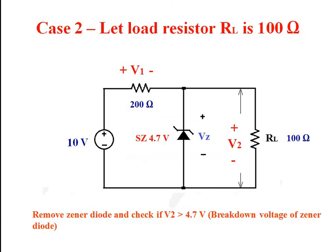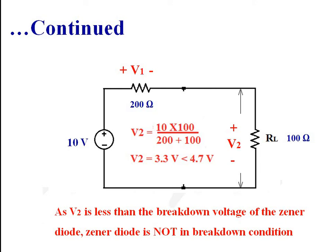Now let us consider another case: when load resistance RL is equal to 100 ohms. When we remove the zener diode, the voltage across load resistance RL is equal to 3.3 volt, which is less than the 4.7 volt breakdown voltage of the zener diode. So this voltage of 3.3 volt is not sufficient to keep the diode in the breakdown condition. Since V2 is less than the breakdown voltage, the zener diode is not in the breakdown region. This is the major limitation of a simple zener regulator — if RL falls below a particular value, the zener diode will no longer be in the reverse biased condition.